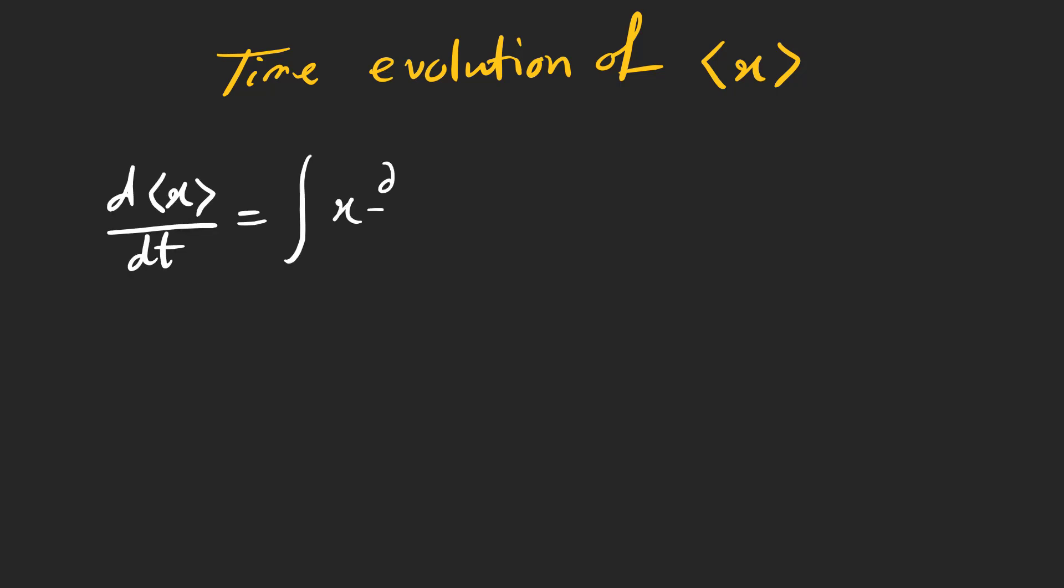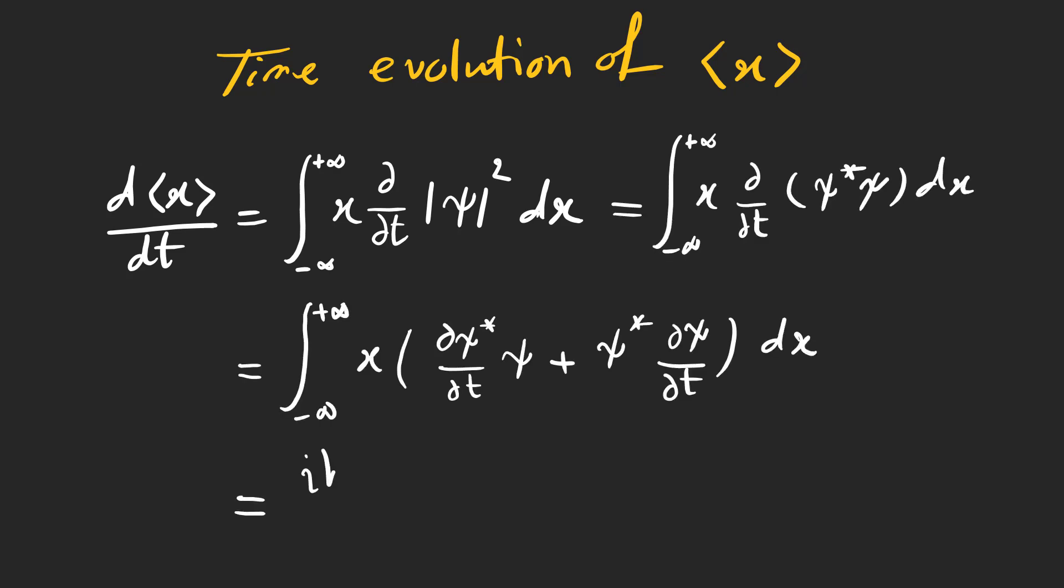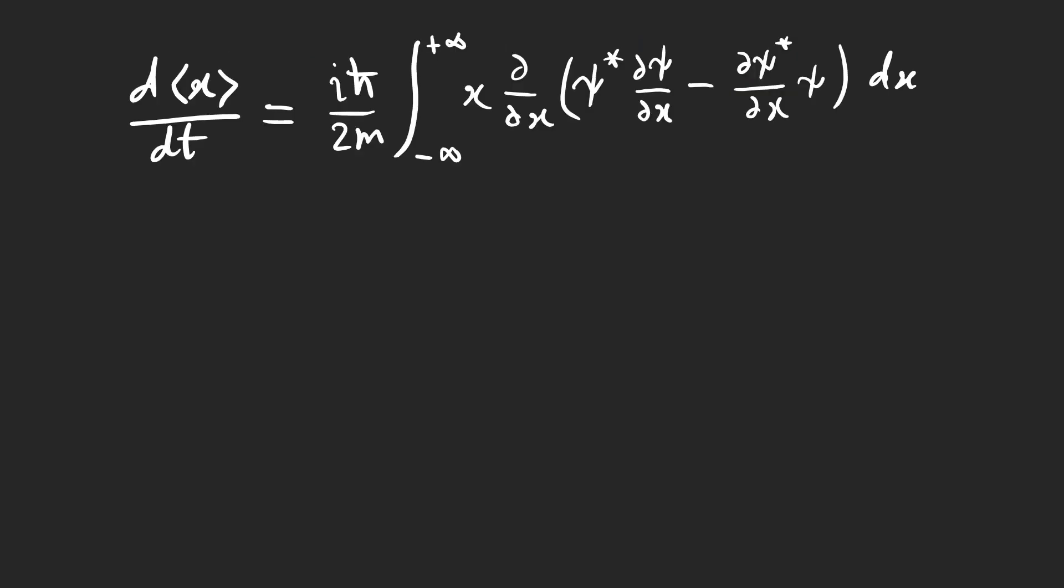Let's take the derivative of the expectation value with respect to time. Like the previous video in this series, we can use the Schrodinger equation to find this formula. We can simplify this integral using integration by parts.